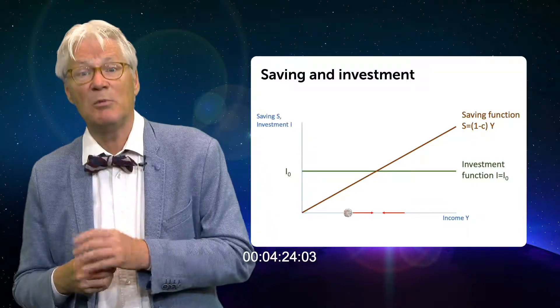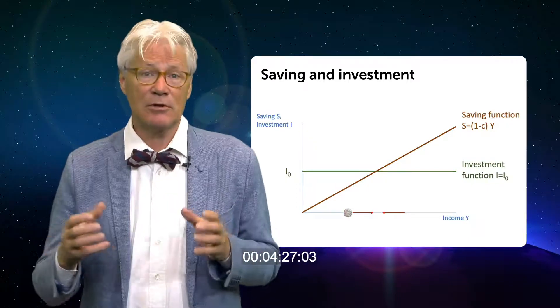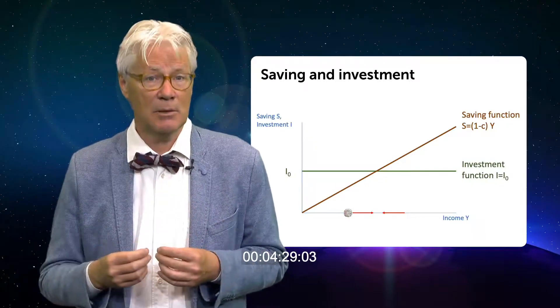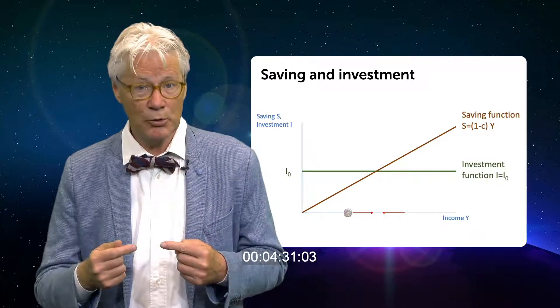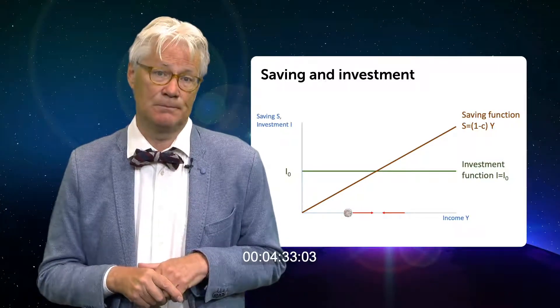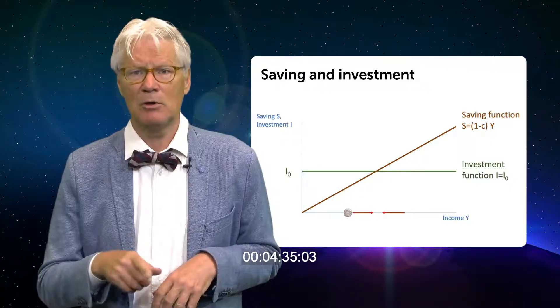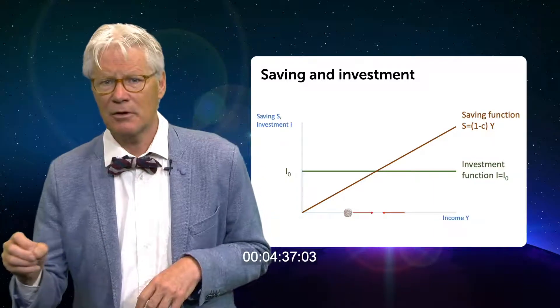So GPP is increasing. And now it is clear that it is a stable equilibrium. Because the arrows point towards the equilibrium. The economy will return to equilibrium after a small disturbance.